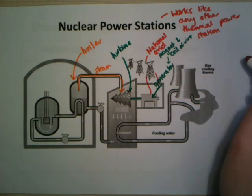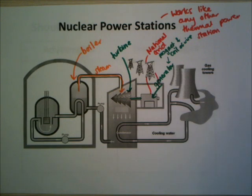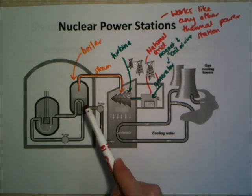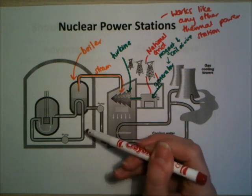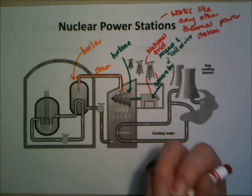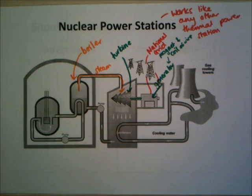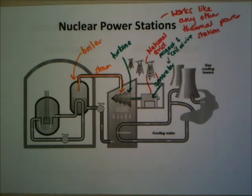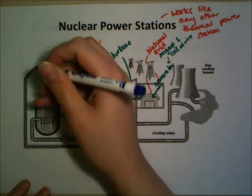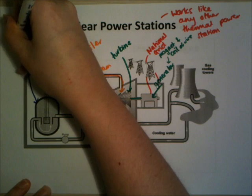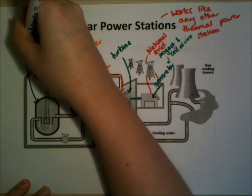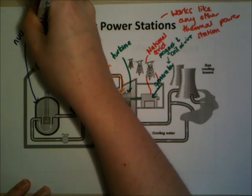This part of a power station is the same wherever you are. What's different in nuclear power is how the water is heated. Normally you'd be burning coal or gas below the boiler, but here we've got a nuclear reactor doing that job — because fission produces energy, and this energy can be used to heat water. This round thing here is the nuclear reactor.